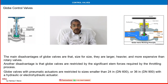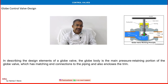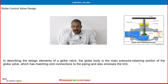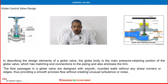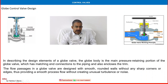Despite limitations, it is still most commonly used in the process industry. Regarding globe valve design: the globe valve body is the main pressure-retaining portion, with matching end connections to the piping, and also encloses the trim. The flow passages in a globe valve are designed with smooth rounded walls without any sharp corners or edges, thus providing smooth process flow without creating unusual turbulence or noise.